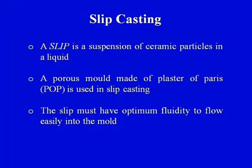The slip must have optimum fluidity to flow easily into the mold. Slip is a liquid, so it should have optimum viscosity to be able to flow into the plaster of Paris mold easily. Basically, we have tried to understand why we call the process 'slip casting,' what a slip is, and what material the mold is made of. The slurry or slip should have optimum viscosity so that it is able to flow easily into the mold.